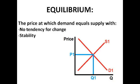The equilibrium is the price at which demand equals supply, with no tendency for change and stability. Looking at the diagram, the equilibrium price is where supply and demand cross — so P1 — and the equilibrium quantity supplied and demanded is Q1. This is also called the market mechanism price.